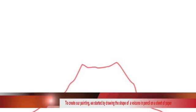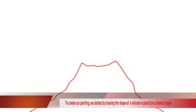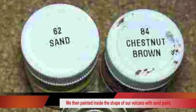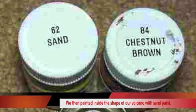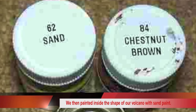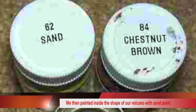To create our painting, we started by drawing the shape of a volcano in pencil on a sheet of paper. We then painted inside the shape of our volcano with brown sand paint.